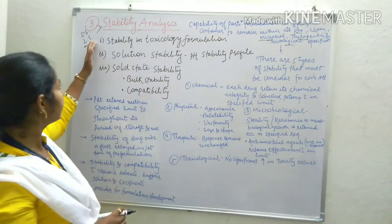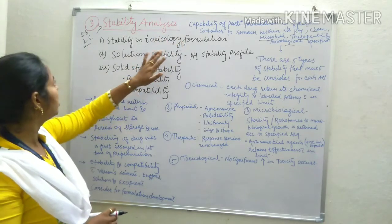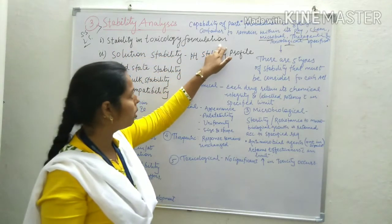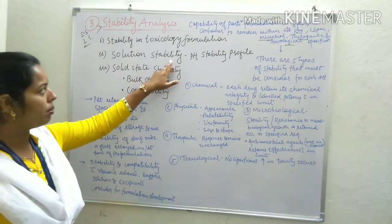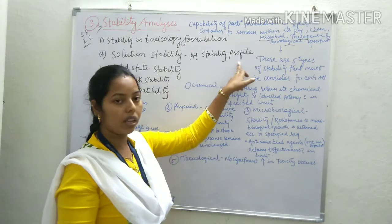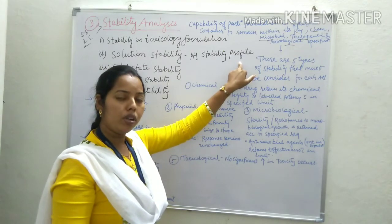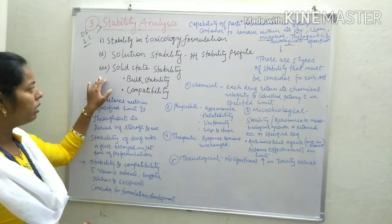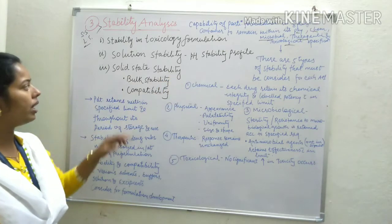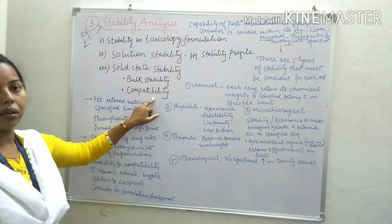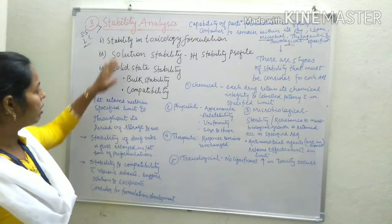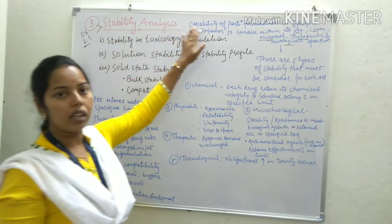Stability analysis is mainly divided into three classes. First is stability in toxicological formulation. Second is solution stability, in which we will study about the pH-dependent stability profile of drugs. Third, which we will discuss in detail, is solid state stability, where we deal with bulk stability and compatibility parameters of raw materials and drugs.